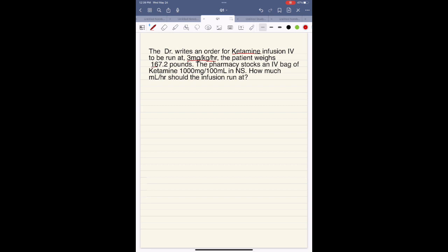We have a doctor who writes an order for ketamine infusion IV to be run at 3 milligrams per kilogram per hour. The patient weighs 167.2 pounds. The pharmacy stocks a bag of 1,000 milligrams per 100 ml in NS. How many milliliters per hour should the infusion run at?